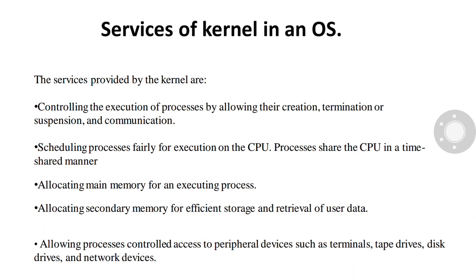The fourth service provided by the kernel is allocating secondary memory for efficient storage and retrieval of user data. This service constitutes the file system. The kernel allocates secondary storage for user files, reclaims unused storage, structures the file system in a well-understood manner, and protects user files from illegal access.